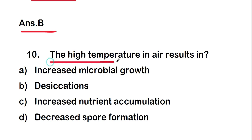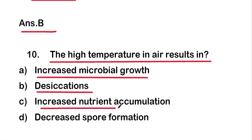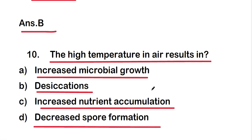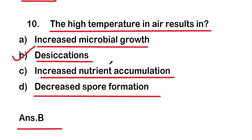Next question: high temperature in air results in — increased microbial growth, desiccation, increased nutrient accumulation, or decreased spore formation? The right answer is option B, that is desiccation. High temperature in air results in desiccation.